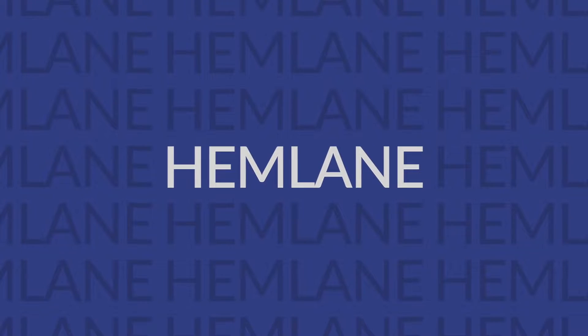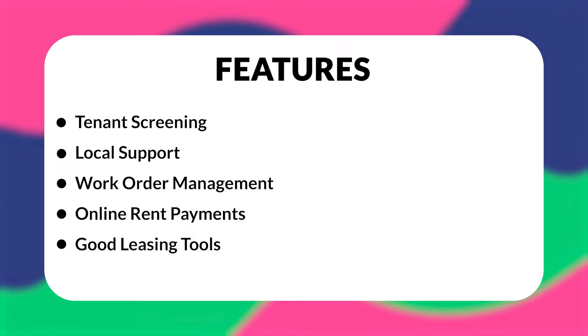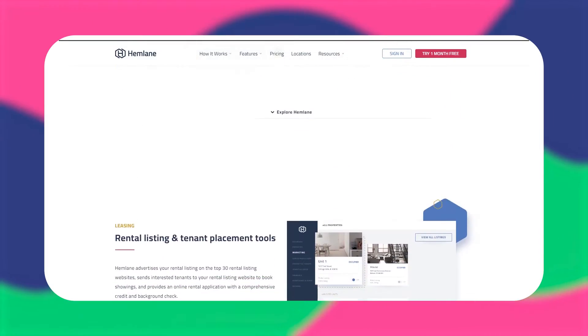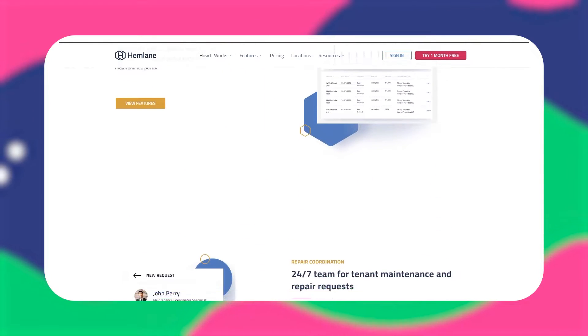Our third option is Hemlane. They are designed as a rental property management tool and offer unique features such as being able to match you with local agents. If you're uniquely concerned with placement, Hemlane is worth considering. However, it's one of the most expensive options on this list. Some features include good leasing tools such as tenant screening, local support features, work order management, and online rent payments. Hemlane's pricing starts at $30 per month with a $2 per unit additional after the first. Their enterprise pricing comes partly due to unique on-location support features other rental property software solutions don't offer. Hemlane does offer a 30-day free trial.